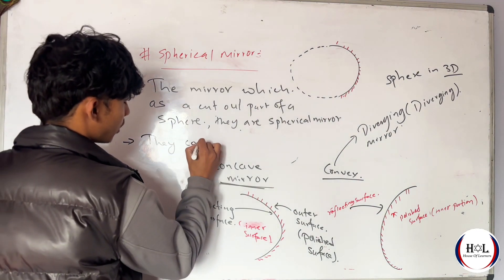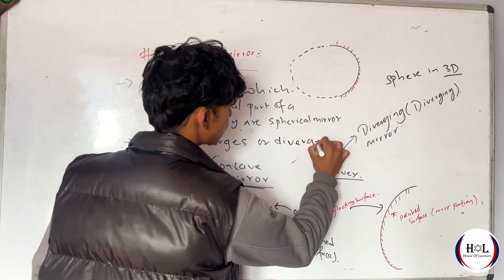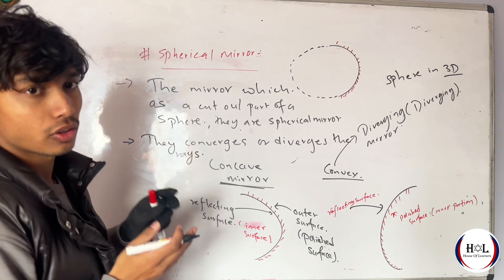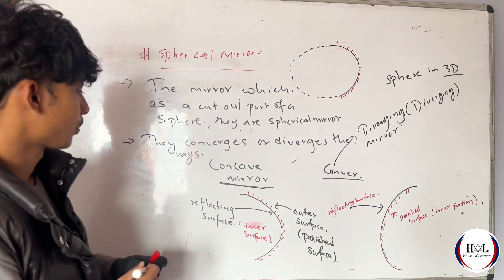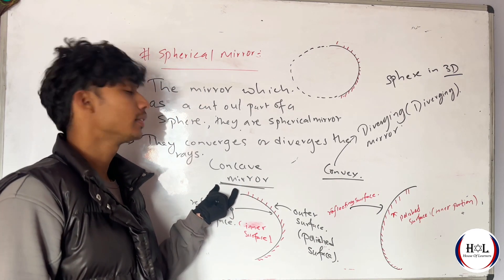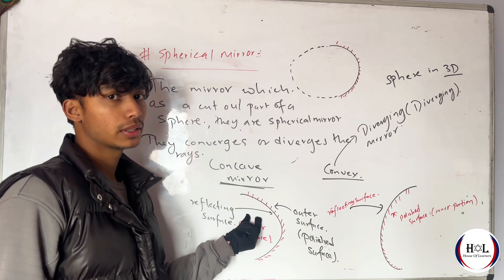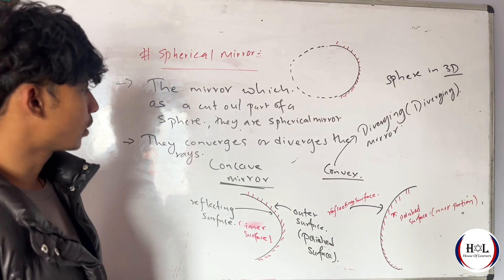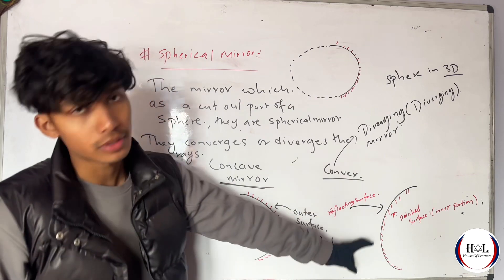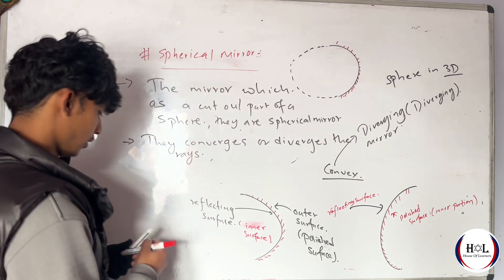They converge or diverge the waves. Concave mirror generally — what is the form? Real image. In the real image, the form is inverted. A concave mirror forms real as well as virtual images.